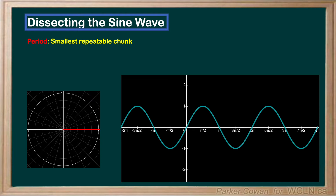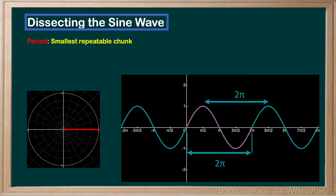The period is defined as the smallest repeatable chunk of a function. Seeing as one full rotation of the unit circle is 2π, it then follows that the period of a sine wave is also 2π. We can also find this number by inspection — we just need to find the smallest repeatable section as the definition suggests. We can see that on the graph here from 0 to 2π. Note that we don't need to start at 0; we can also find the period from different points on the graph, for example from π/2 to 5π/2, or 3π/2 to 7π/2.